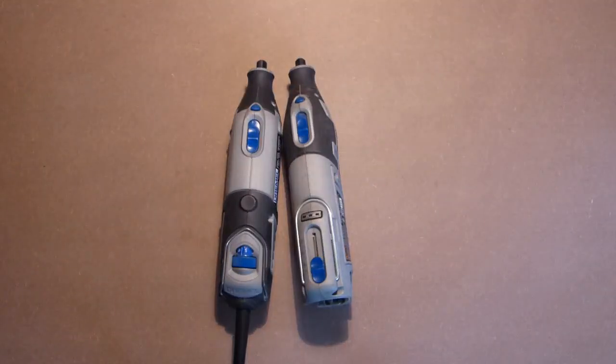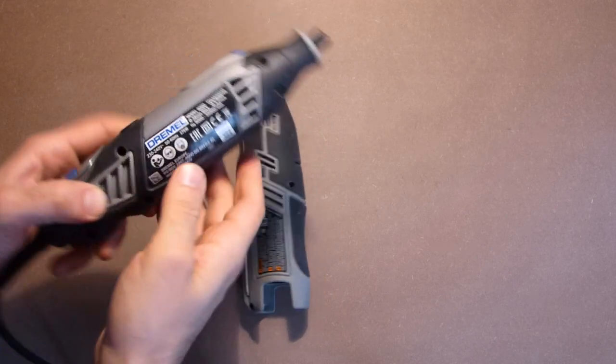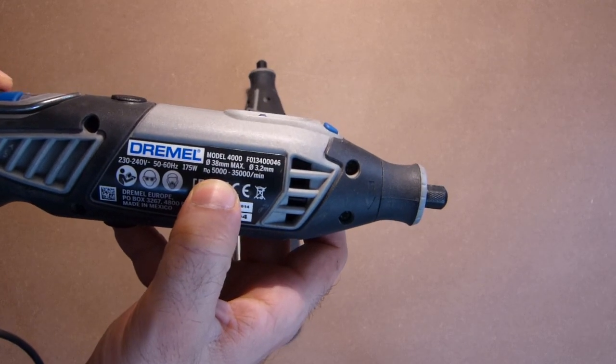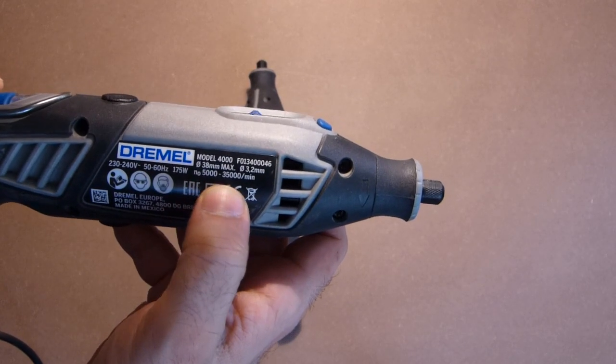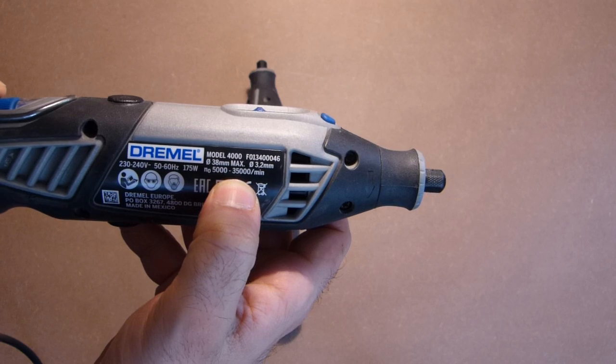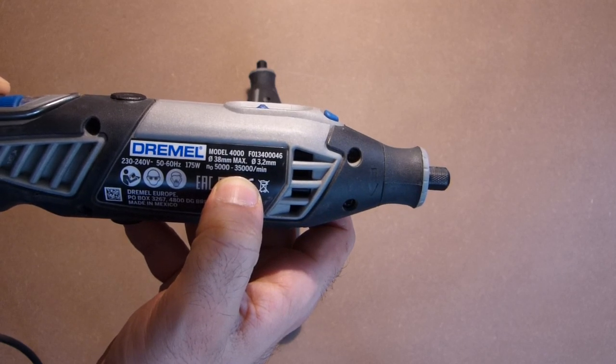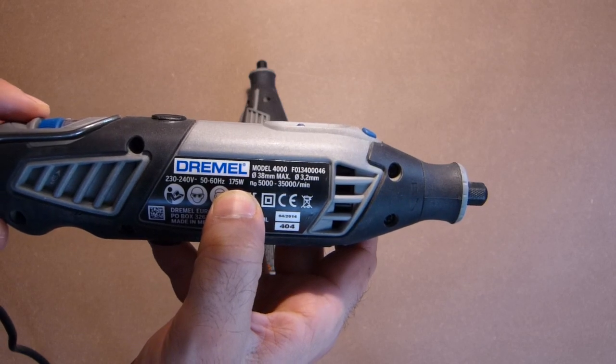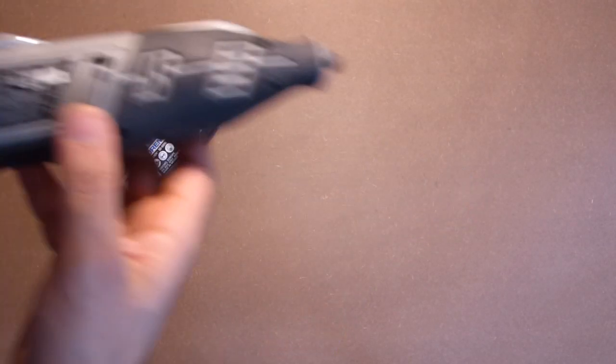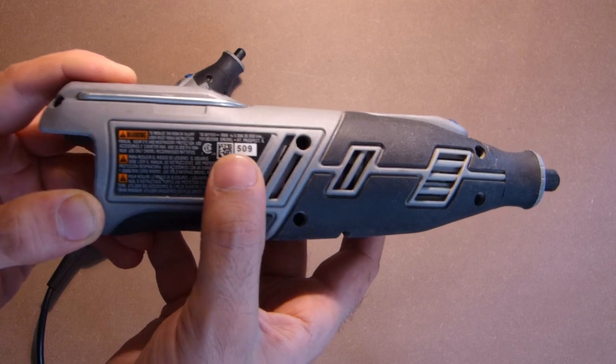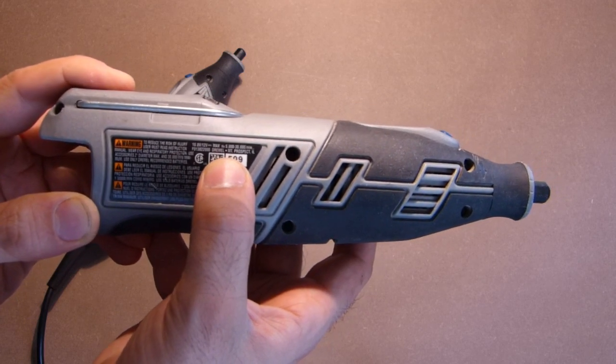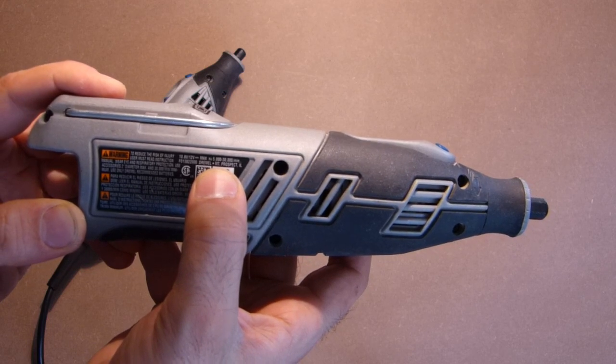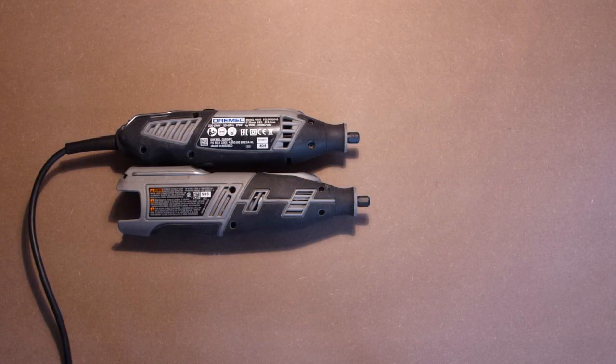As to the main data of the devices. Here we have the minimum speed 5000 rotations per minute and here the maximum is 35,000. The power is 175 watts. As to the wireless tool, the minimum speed is 5000 rotations per minute and the maximum is 30,000. Both devices are assembled in Mexico.